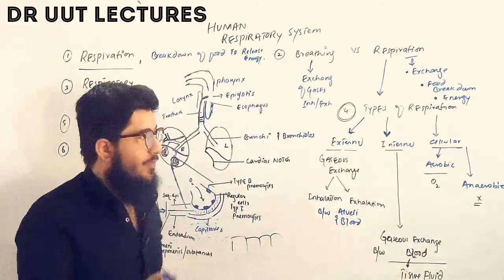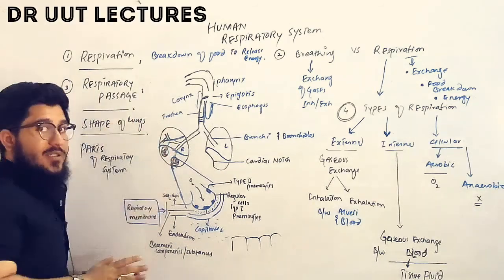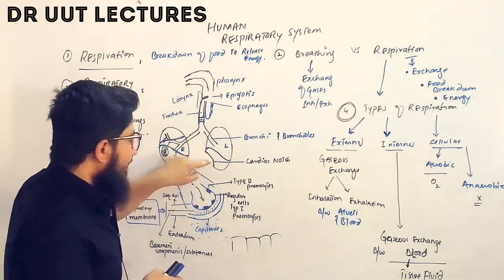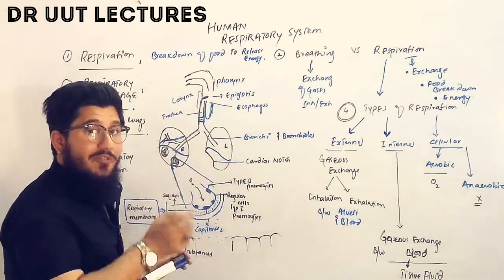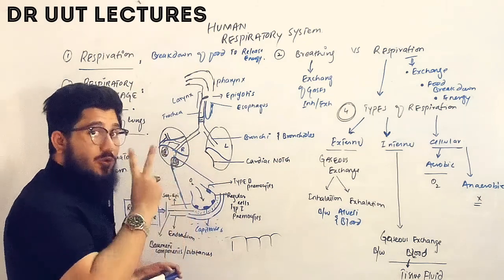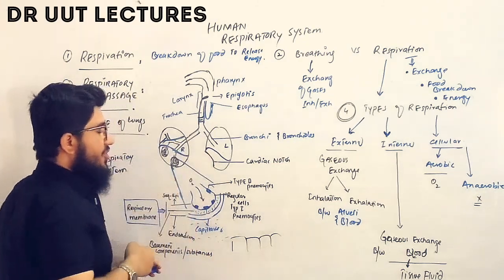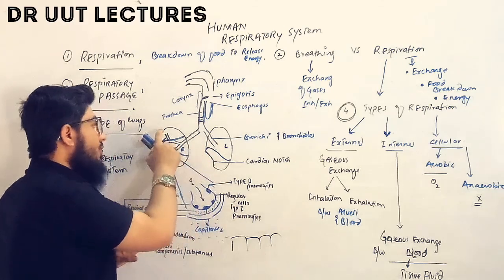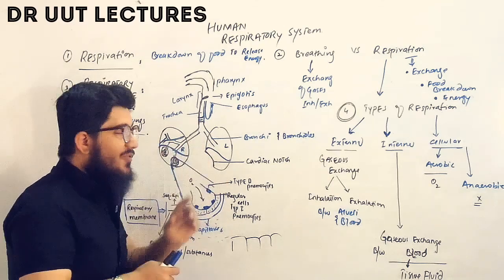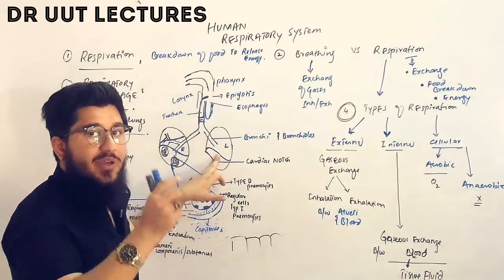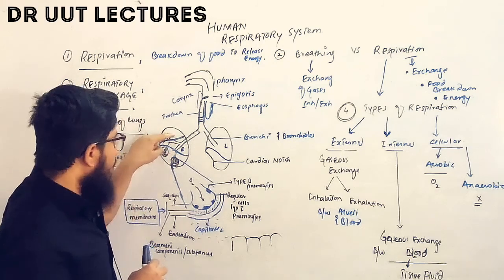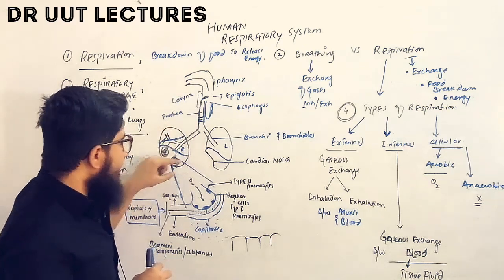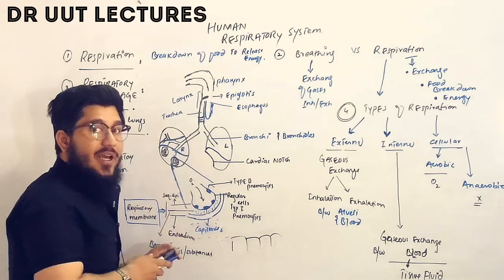Now let's look at the shape of the lungs. We have two lungs: left and right. The left lung has a depression and is composed of two lobes due to one oblique fissure. The right lung has two fissures — a horizontal fissure and an oblique fissure — giving it three lobes. In total there are five lobes: three on the right (superior, middle, inferior) and two on the left (superior, inferior).